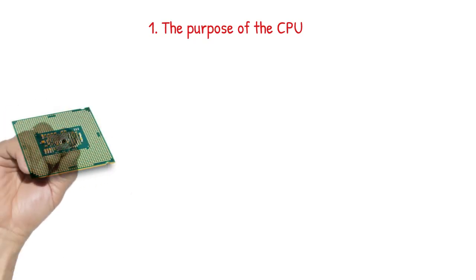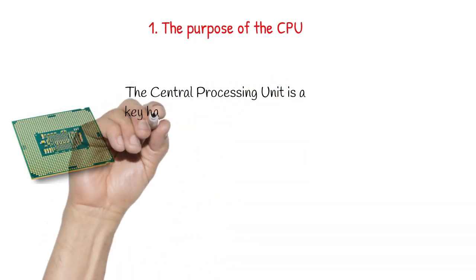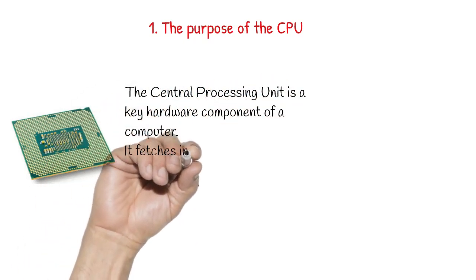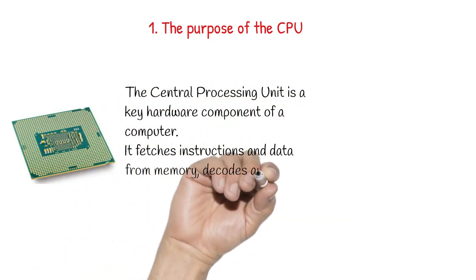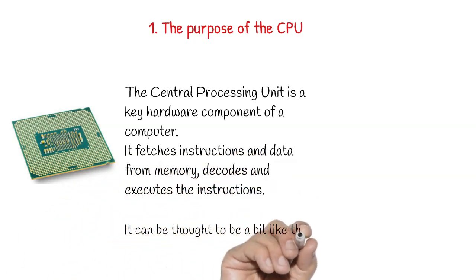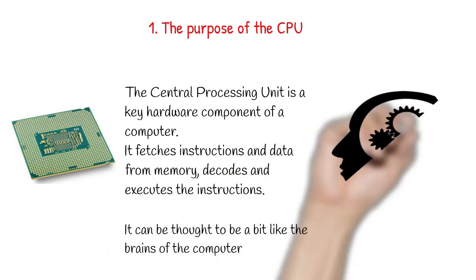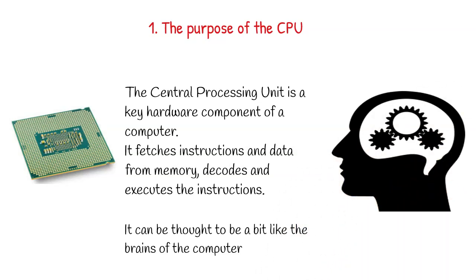First of all, let's consider what the purpose of a CPU is. The central processing unit is a key hardware component of a computer. It fetches instructions and data from memory, decodes and executes the instructions. It can be thought of as a bit like the brains of a computer.